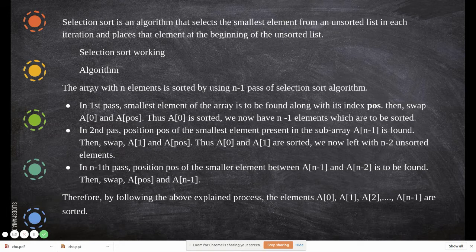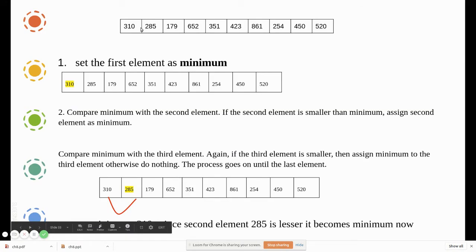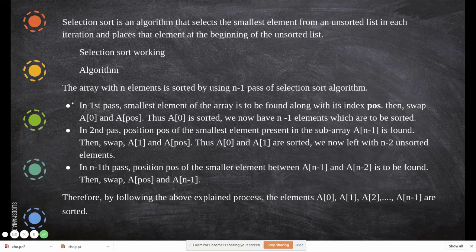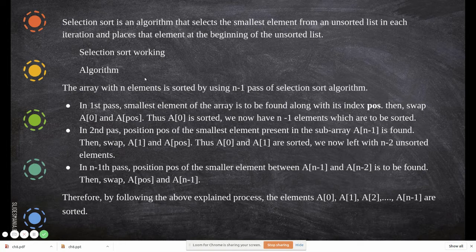I'll explain with the data first, and then the statements will be more clear. We take the array values which are in an unsorted position. We select the first element, a[0], as the minimum — even if it is not the minimum. In the first pass, the smallest element of the array is to be found along with its index position, then swap a[0] and a[position].